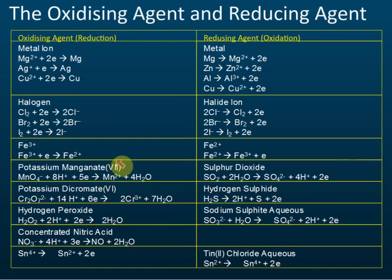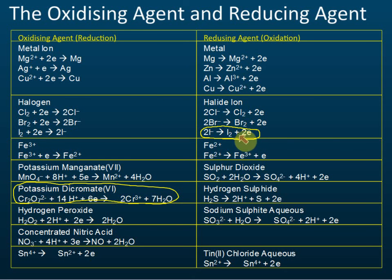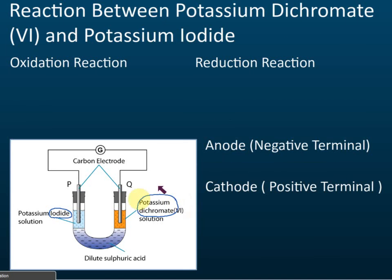Potassium dichromate is the oxidizing agent, and iodide (a halide) is the reducing agent. The general rule is: halogen is the oxidizing agent and halide is the reducing agent. So potassium dichromate is the oxidizing agent.